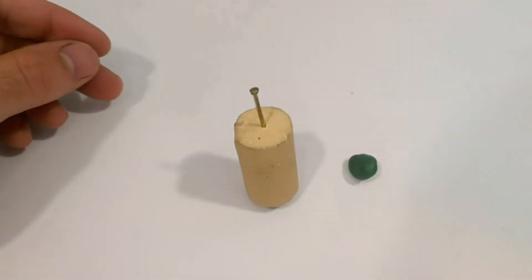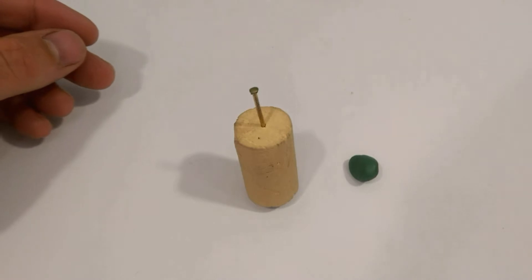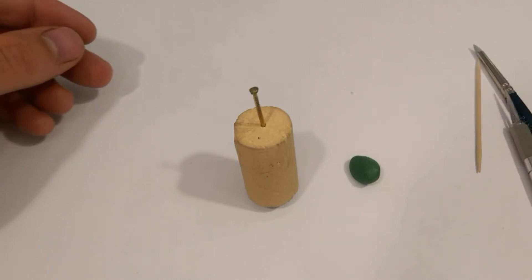What we're going to need: Cork, green stuff trying not to stick it to anything, always handy to have one of these, a little toothpick, sharp knife, color shapers.